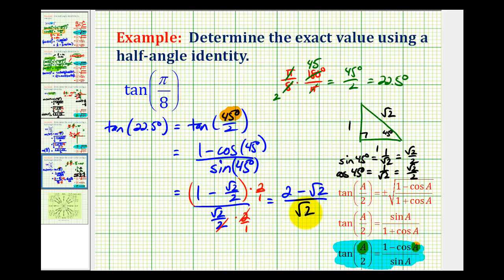The last thing we want to do is rationalize the denominator. Let's rewrite this: we have (2 - √2)/√2, and now we'll multiply the numerator and denominator by √2.